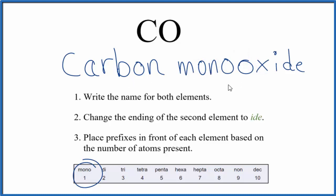But 'carbon monooxide' looks weird, so chemists get rid of one of the O's and just write carbon monoxide. So the name for CO is carbon monoxide. If you were given the name carbon monoxide, you'd know there's only one carbon and one oxygen, giving the formula CO.